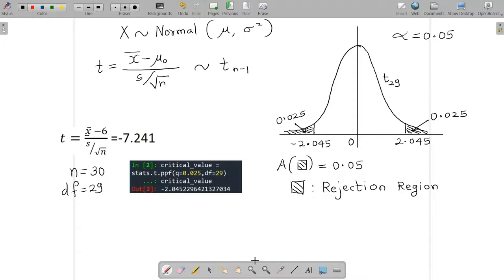And the value minus 2.045 is a critical value for this rejection region. This means if our test statistic falls in the rejection region, we reject H0.